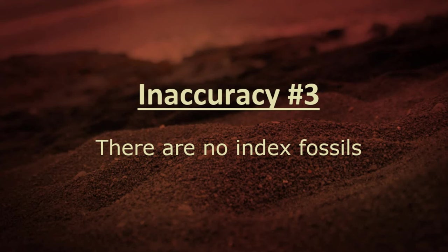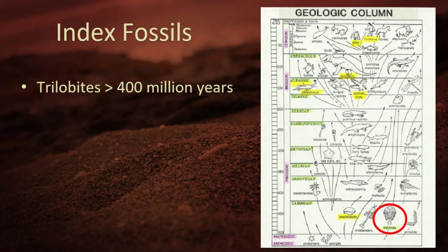Inaccuracy number three: secular scientists say there are index fossils, but there aren't. Trilobites are supposed to have existed more than 400 million years ago — a sea creature buried first in the flood. Evolutionists say that's the oldest thing. The index fossil is in the lowest strata, so they call it the oldest. The next index fossil is the lobe-finned fish at over 300 million years ago. The third index fossil was dinosaurs living over 70 million years ago. Trilobites are said to date rock layers at 500 to 600 million years in Holt Modern Earth Science.